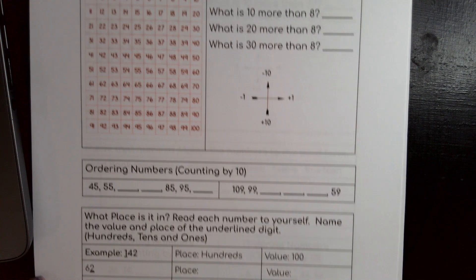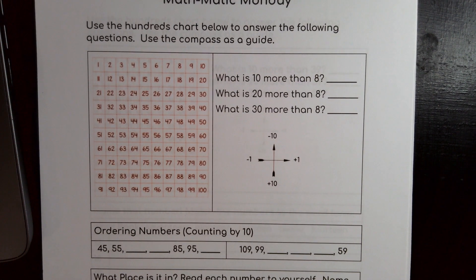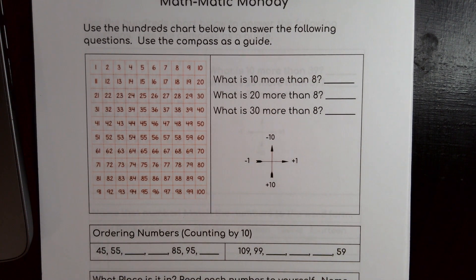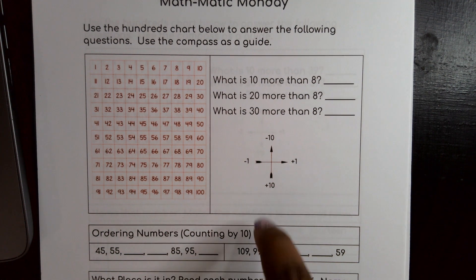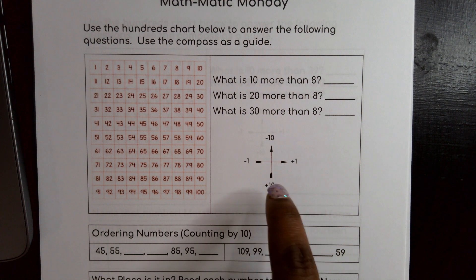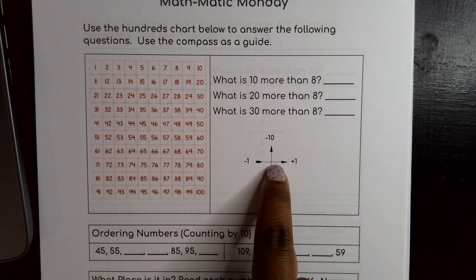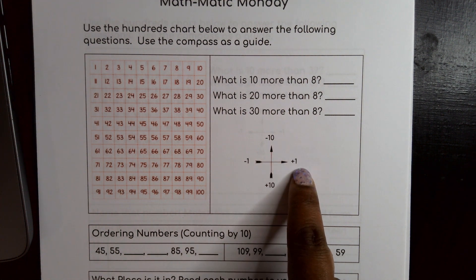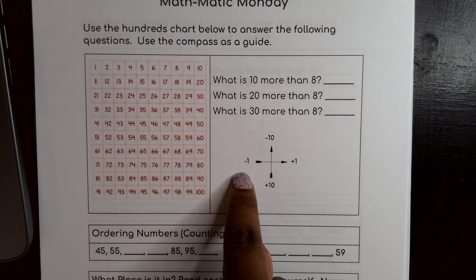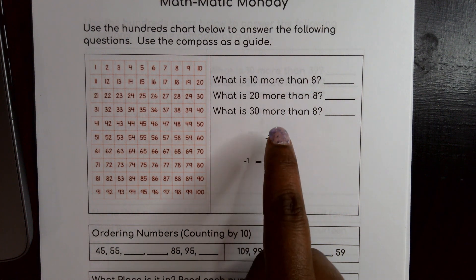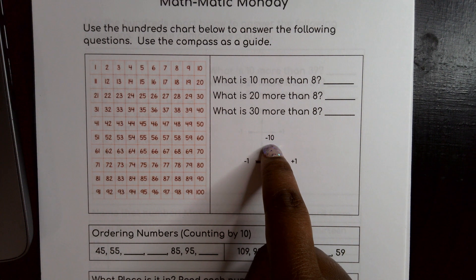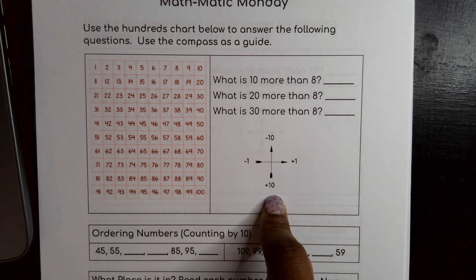So the first thing we're going to do is we want to use the hundred chart below to answer the following questions. We're going to use the compass here as a guide. So this compass lets me note if I go to the right I'm adding one. If I go to the left I'm subtracting one. If I'm going up I'm subtracting 10 and if I'm going down I'm adding 10.